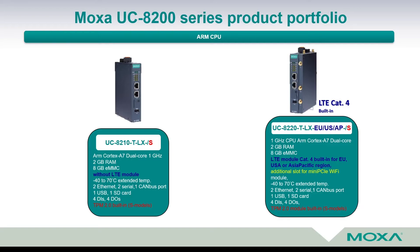Besides the built-in LTE category 4 module, the device has an additional slot for a Mini PCIe Wi-Fi card. It also comes with an extended temperature range, two Ethernet ports, two serial ports, one CAN bus port, one USB port, one SD card for storage expansion, four digital inputs, and four digital outputs. It uses the same 1 gigahertz dual-core CPU, 2 gigabyte RAM, and 8 gigabyte eMMC, with Linux installed as the operating system and Trusted Platform Module 2.0 support.